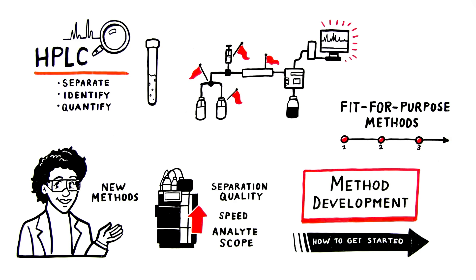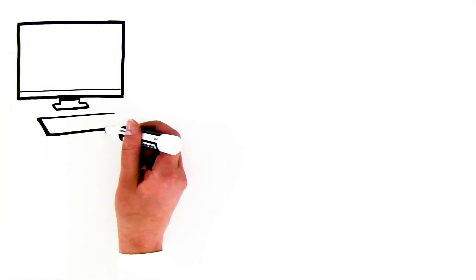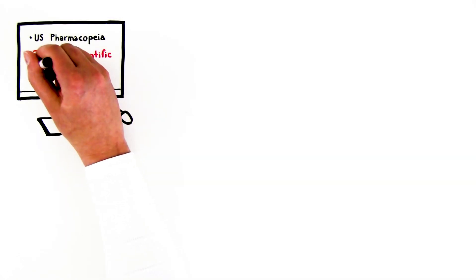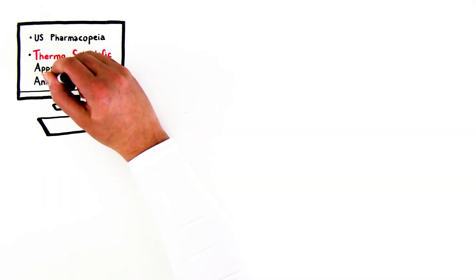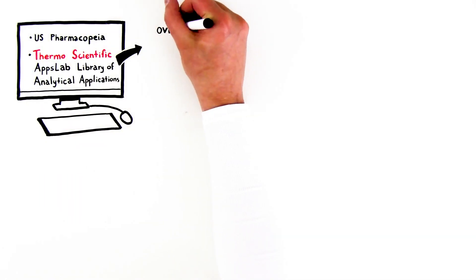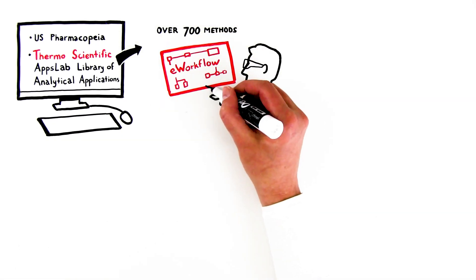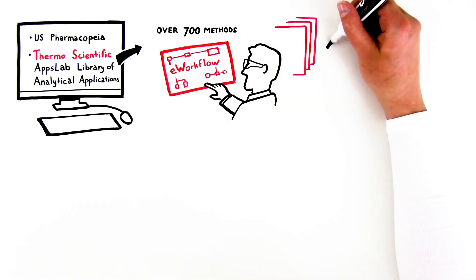Here's how to get started. First, ensure a suitable method doesn't already exist. The U.S. Pharmacopeia and Thermo Scientific Apps Lab Library of Analytical Applications, which contains over 700 methods of detailed e-workflow procedures, are good places to start. If no applicable method exists,